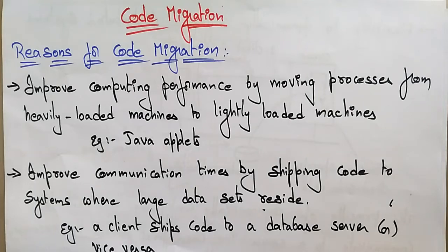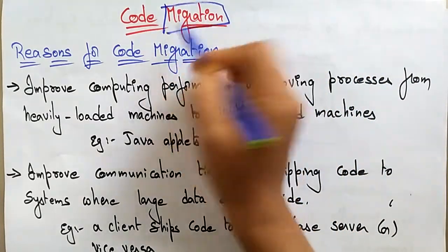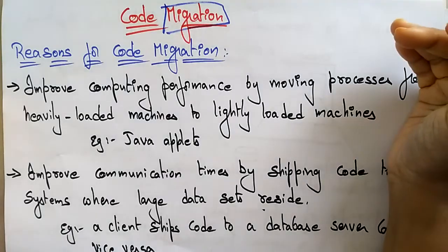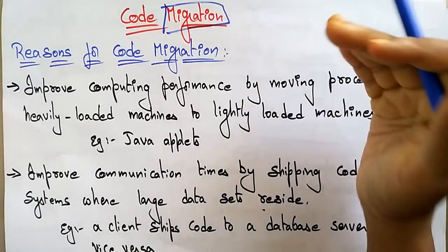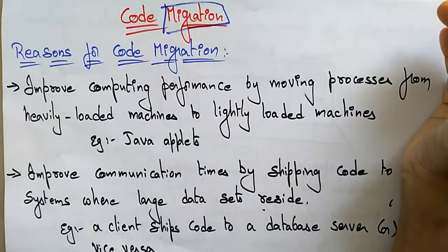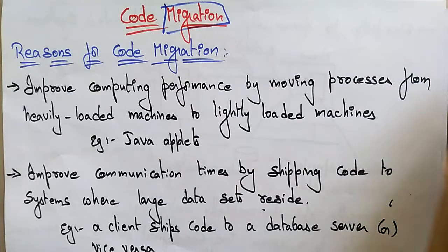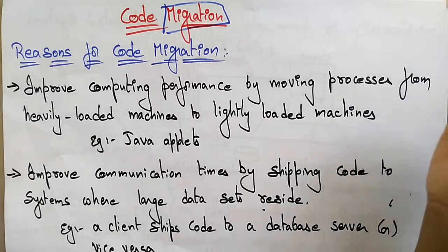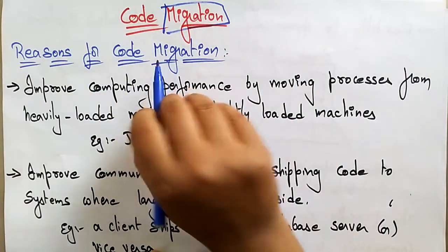Welcome back. Let's continue with distributed systems. The next topic is code migration. Migration means changing from one place to another, so here the code is going to move from one location to another. Is it necessary to use code migration? What exactly is code migration, and in which areas will we use it? Let's see how code migration is helpful in distributed systems.